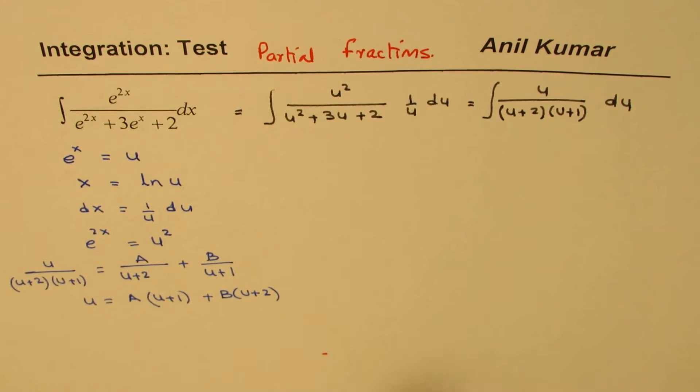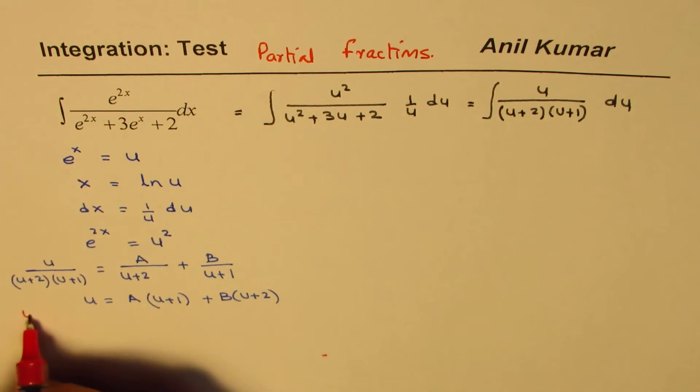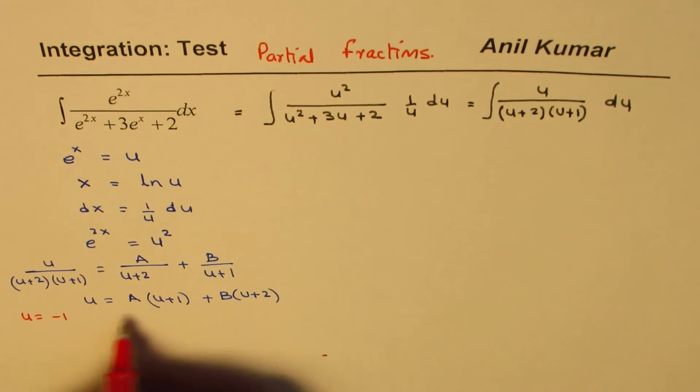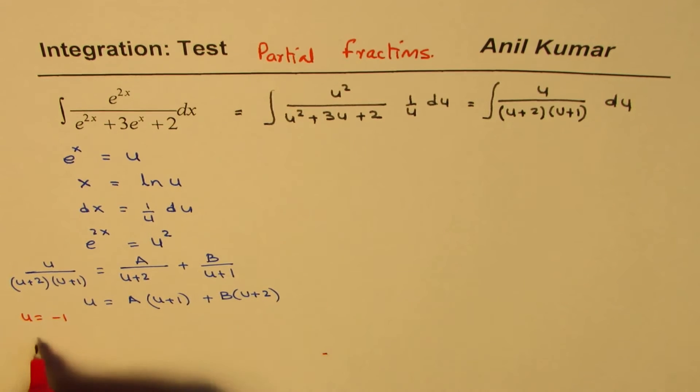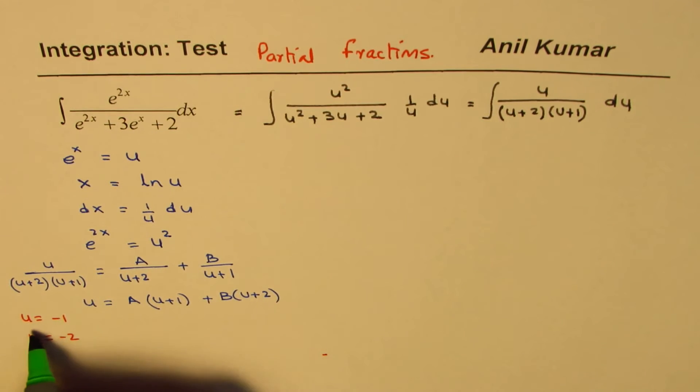Now, to solve for A and B, easy approaches, we could substitute u equals minus 1, this will be 0, find B, we could substitute u equals minus 2, that will be 0, find A. So that is the approach which we are going to take here, and then find both A and B.